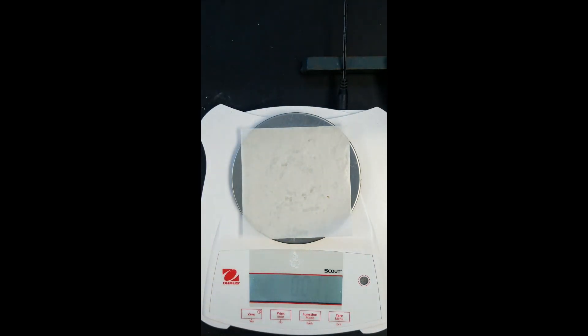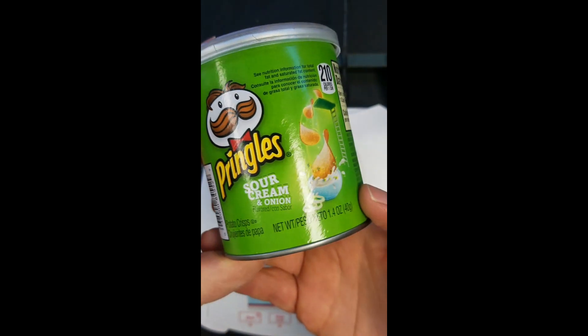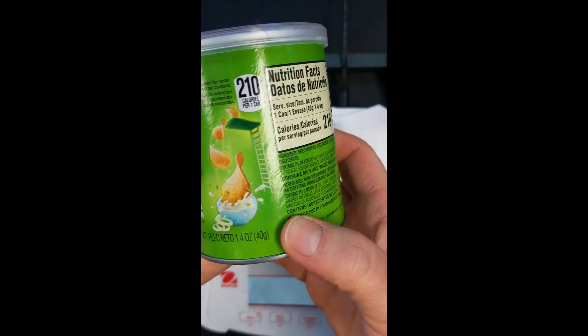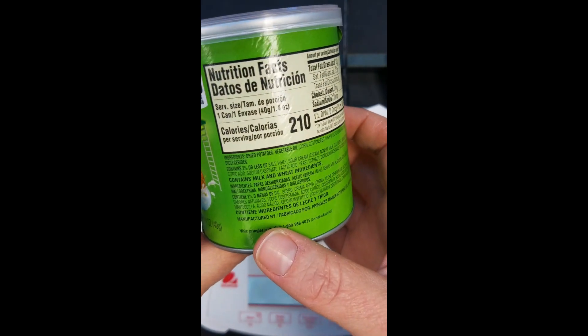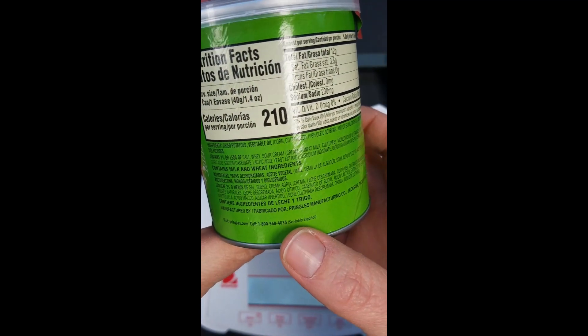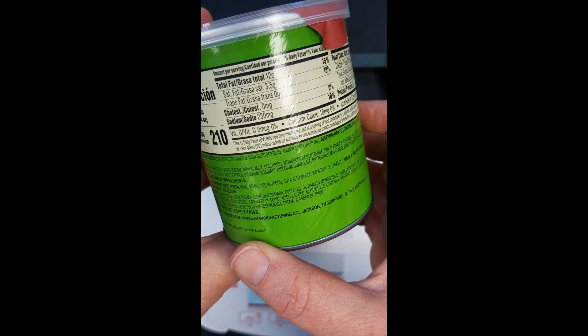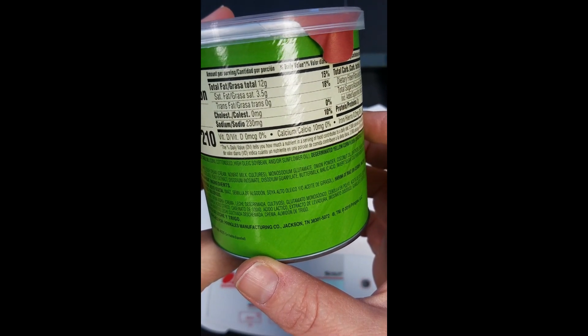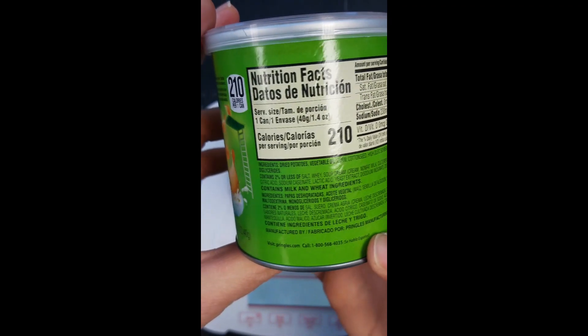We're going to start our second trial, we're going to weigh an empty 100 milliliter beaker so that we can do our second trial using Pringles. And so our serving size is 40 grams. We have our calories from fat and our percentage of fat for our Pringles.